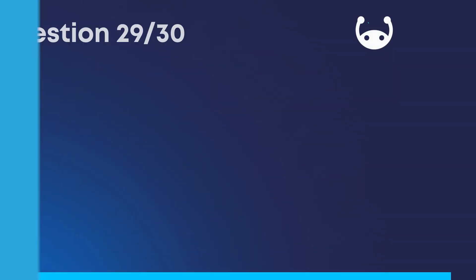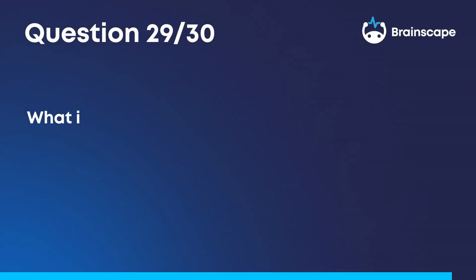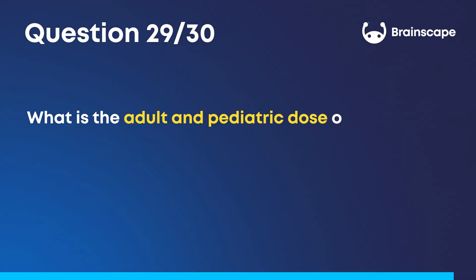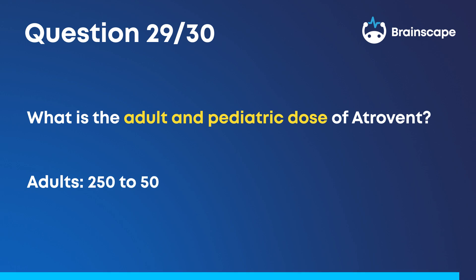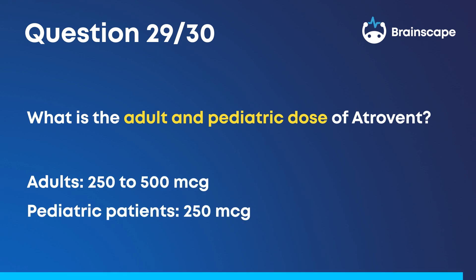Question 29. What is the adult and pediatric dose of Atrovent? Adults, 250 to 500 micrograms. Pediatric patients, 250 micrograms.